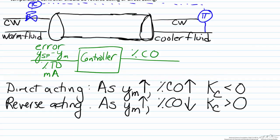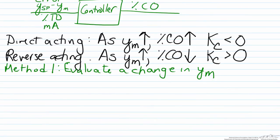The first method is to evaluate a change in the measured variable. For the heat exchanger, the value we are measuring here is the temperature of the process fluid. If the fluid temperature goes up, in other words the process fluid temperature is too high, we are going to increase the cooling water flow rate.